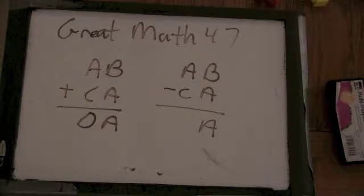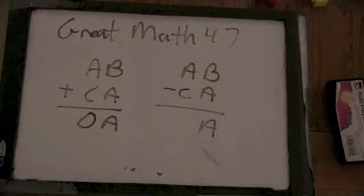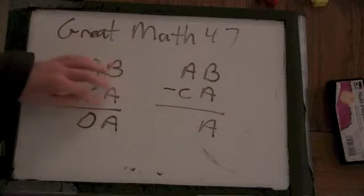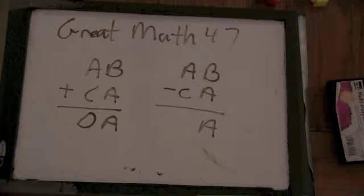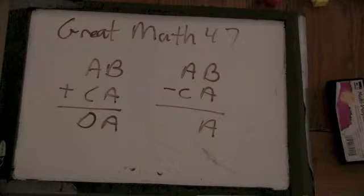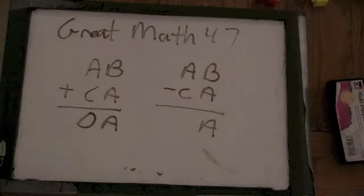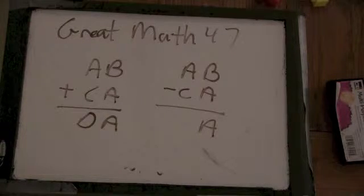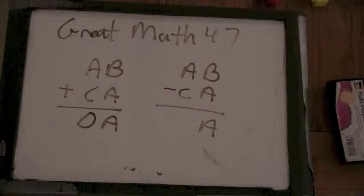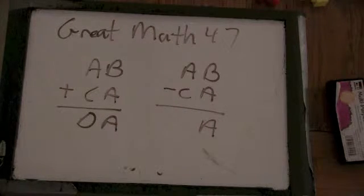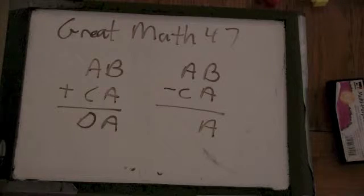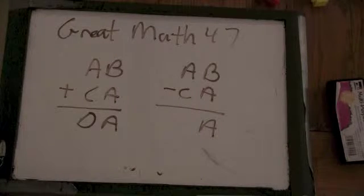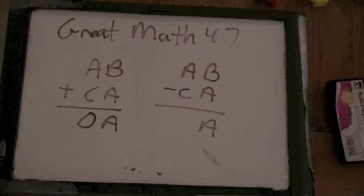Well, the second equation doesn't involve D. It's just this first one. We know B plus A is A, and B minus A is A. Interesting. Well, that means either B or A has to be 0. Because that's the only way you can add a number to the number and get the same first number.